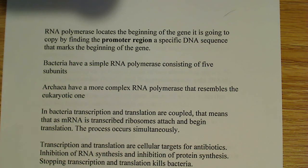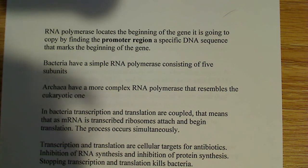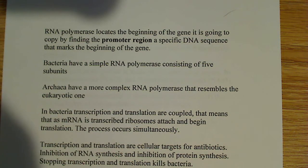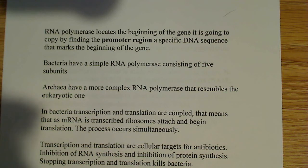Bacteria have a simple RNA polymerase of five subunits. Archaea, on the other hand, have a more complex RNA polymerase — their transcription and translation machinery more closely resembles eukaryotes than prokaryotes. So archaea's RNA polymerase resembles a eukaryotic one; that's an interesting difference between archaea and bacteria.